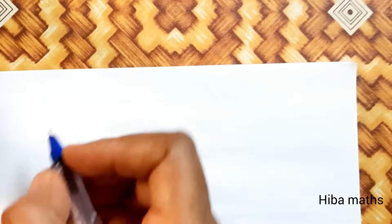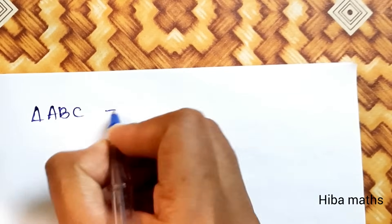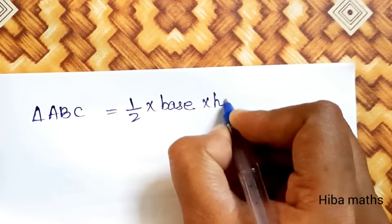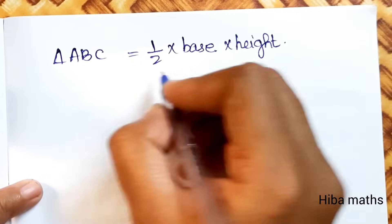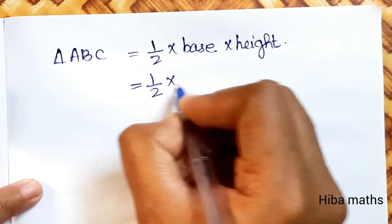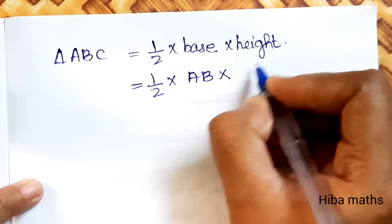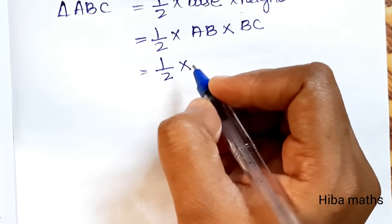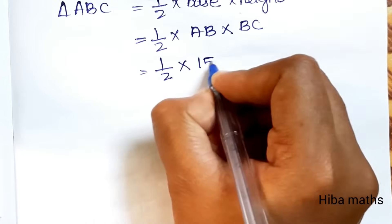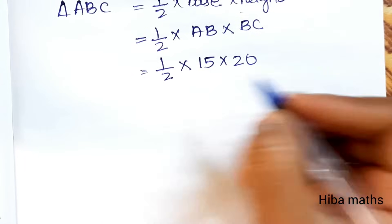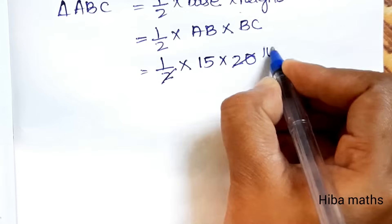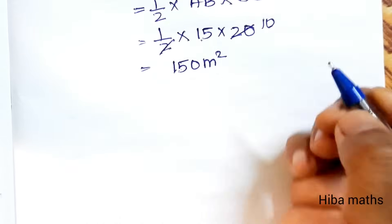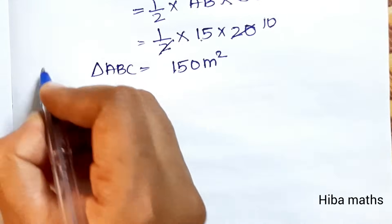Let's find the area of triangle ABC. Triangle ABC is a right angle triangle, so area = half into base into height = half × AB × BC = half × 15 × 20. Cancelling, 20 divided by 2 is 10, so 15 × 10 = 150 square meter. Area of triangle ABC is 150 m².